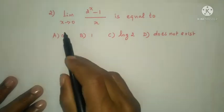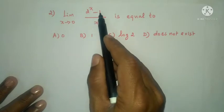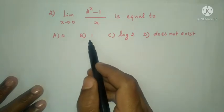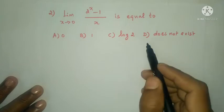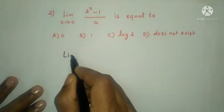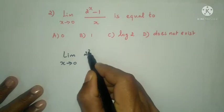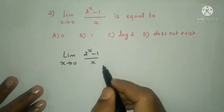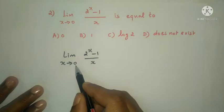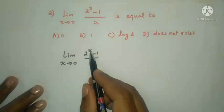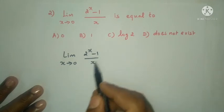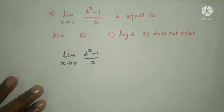Next question: limit x tends to 0, 2 to the power x minus 1 divided by x, equals? Option A: 0. Option B: does not exist. Option C: log 2. Substituting x = 0: numerator gives 2⁰ minus 1 = 1 minus 1 = 0, denominator = 0. This is a 0/0 indeterminate form.